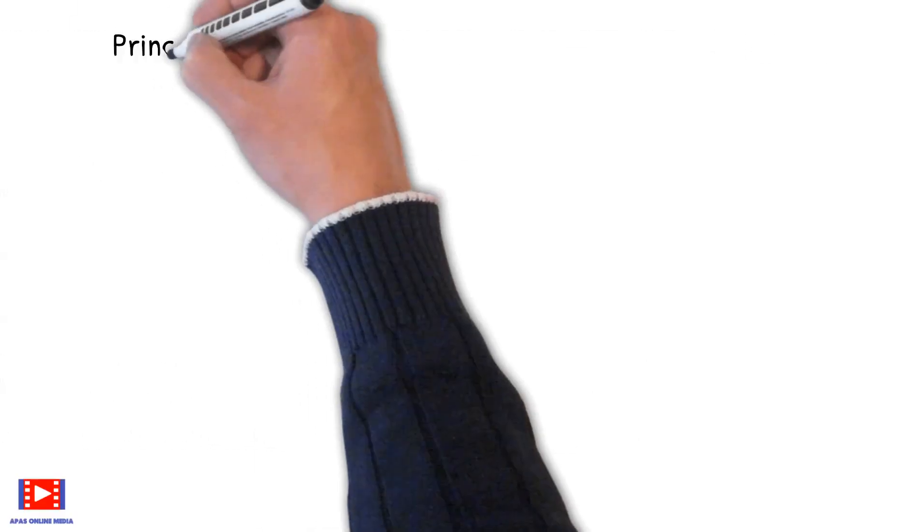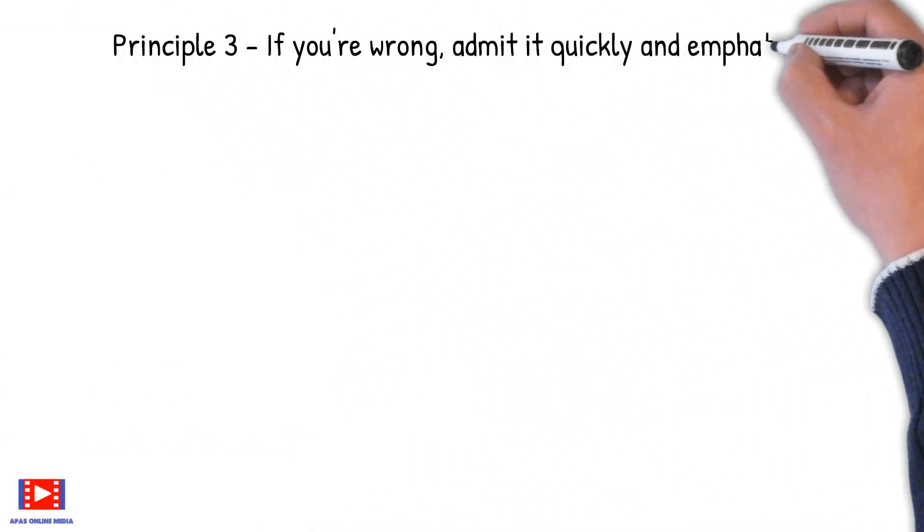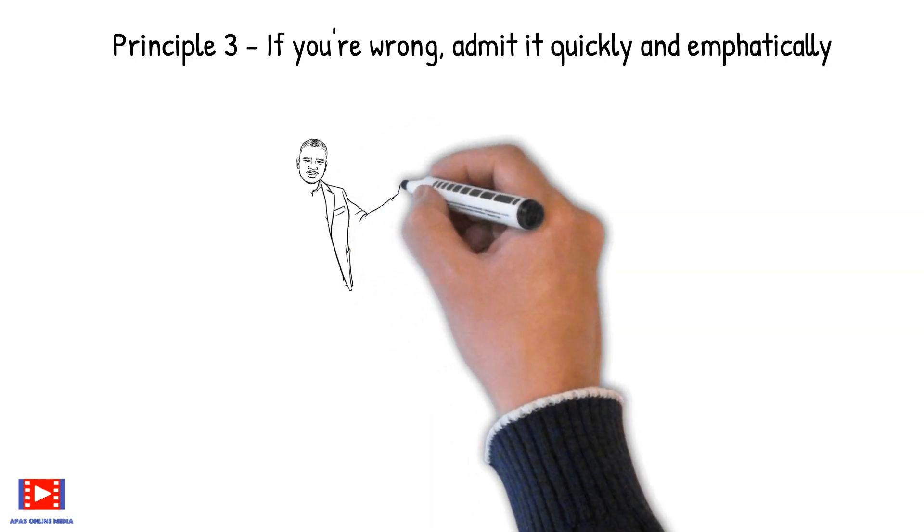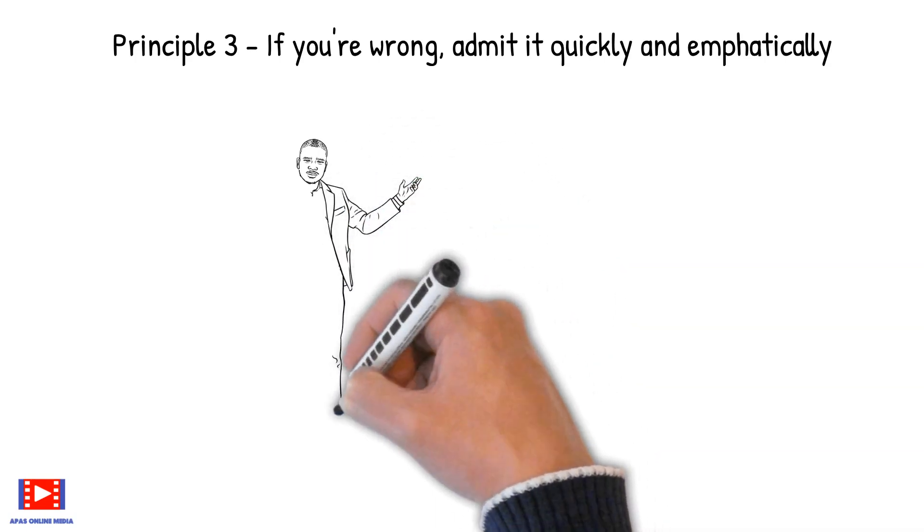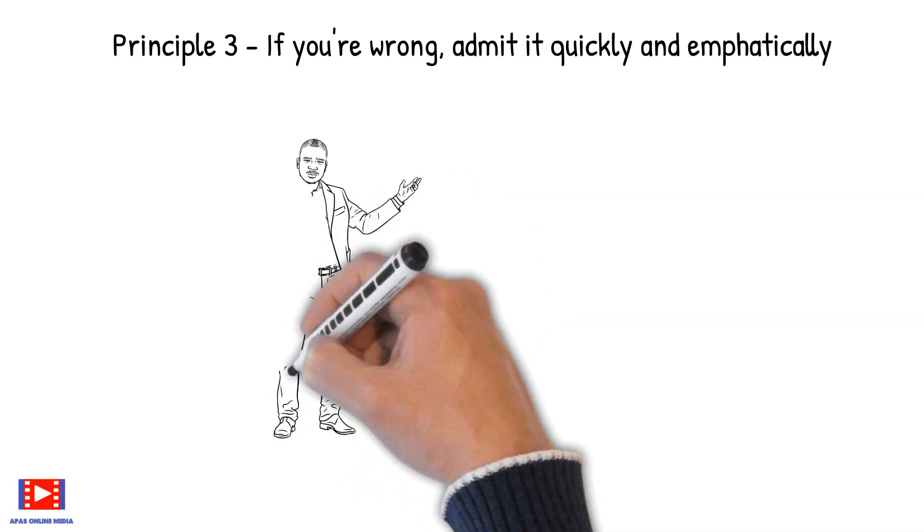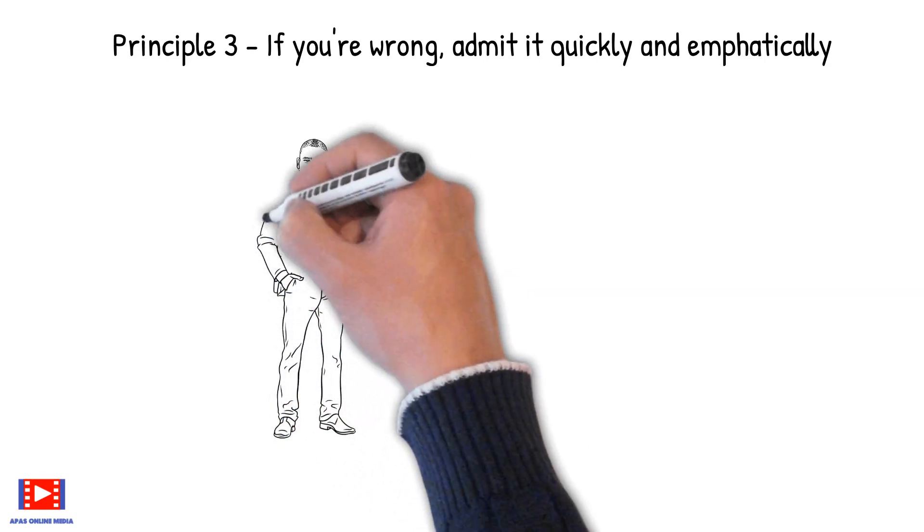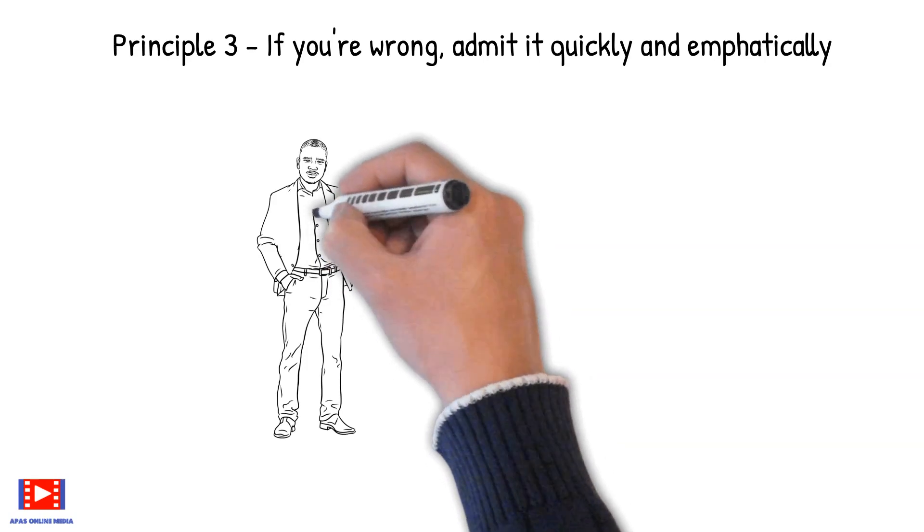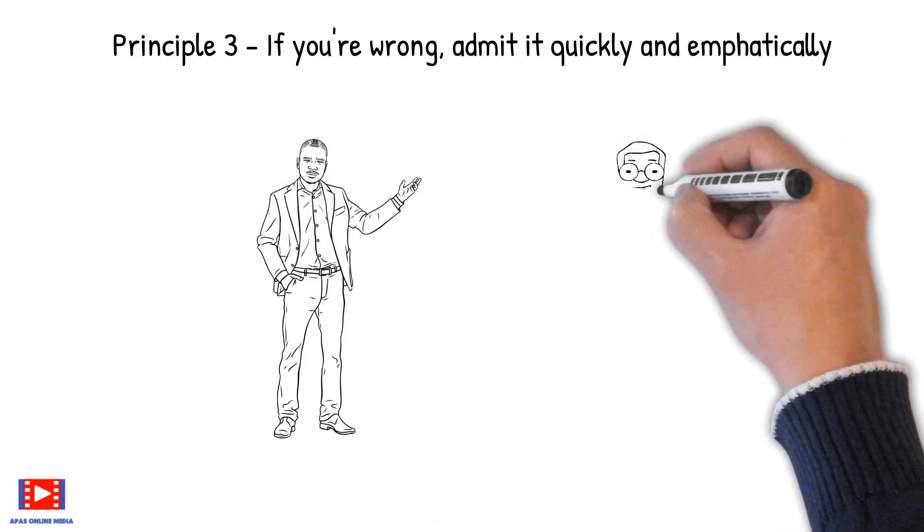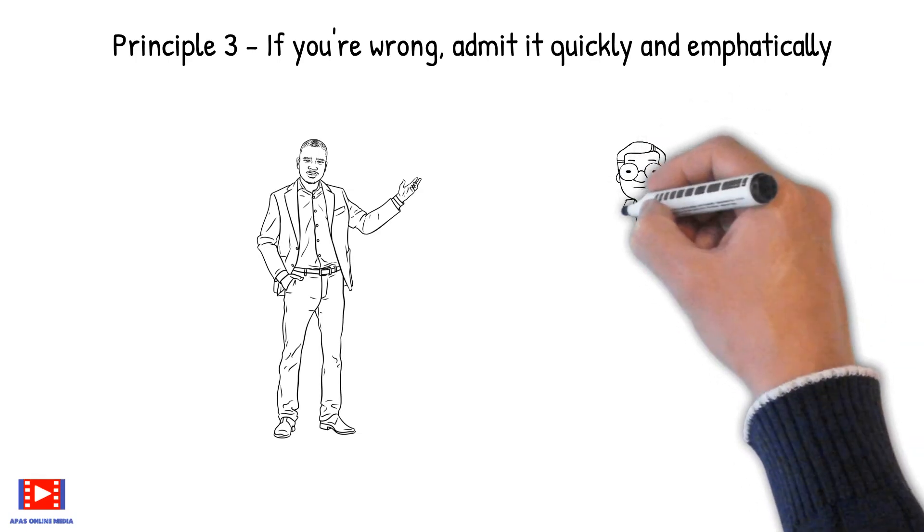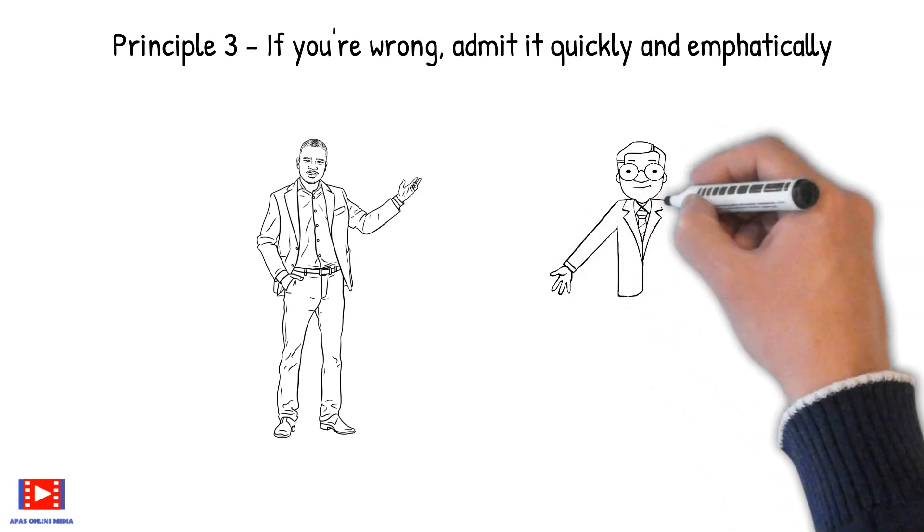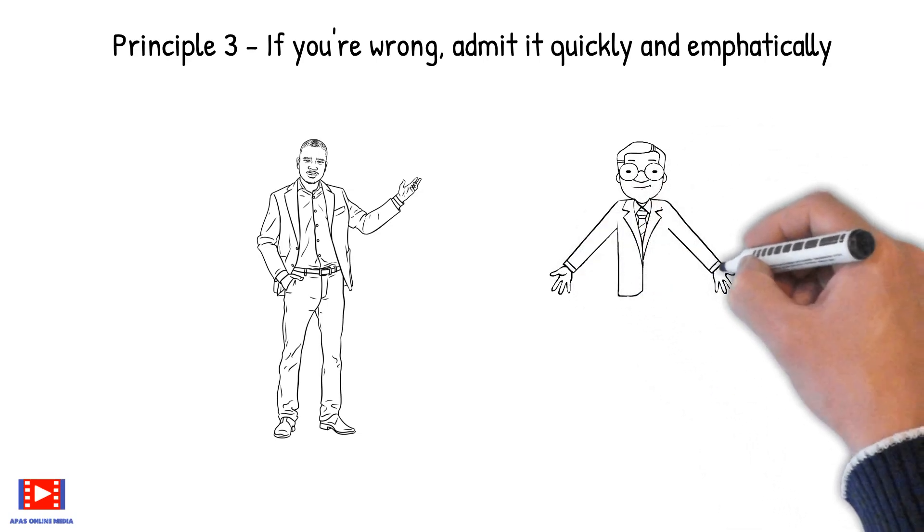Principle 3: If you're wrong, admit it quickly and empathetically. Any fool can try to defend his or her mistakes, and most fools do, but it raises one above the herd and gives one a feeling of nobility and exaltation to admit one's mistake. So next time if you're wrong, admit it quickly with empathy.